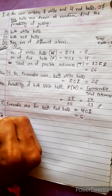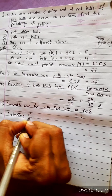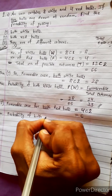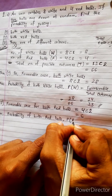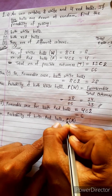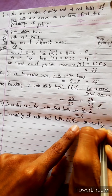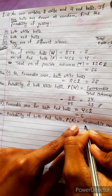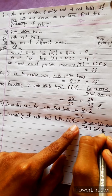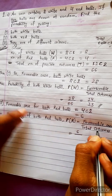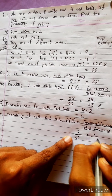Now, probability of both red balls, P(R), equals favorable cases divided by total outcomes — same formula as before. Favorable case is 6, total outcomes is 66. 6 divided by 66 equals 1 by 11. So the probability of drawing both red balls is 1/11.